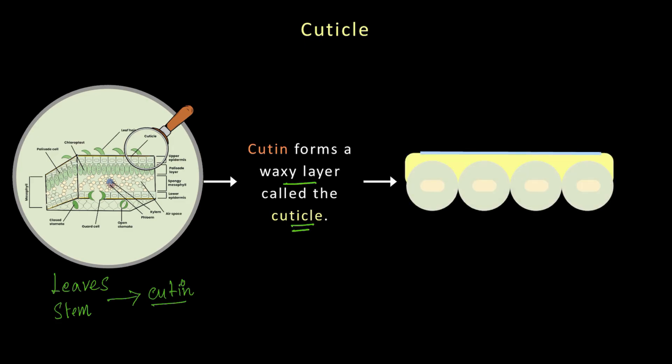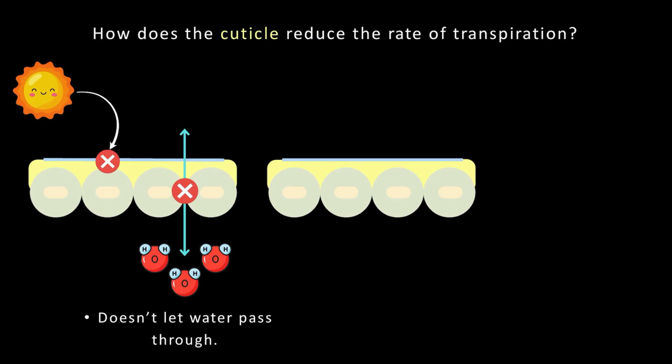The cuticle is like an inbuilt sunscreen which blocks harmful UV rays. It protects the plant from UV rays and prevents moisture from escaping. But how exactly does the cuticle reduce the rate of transpiration and lock in the moisture?